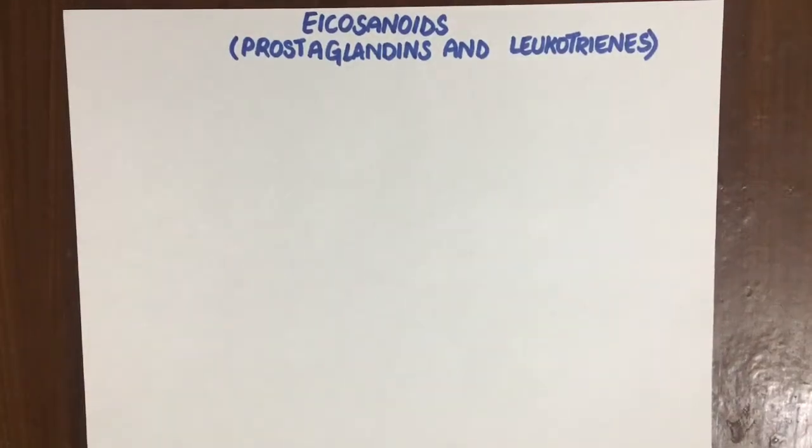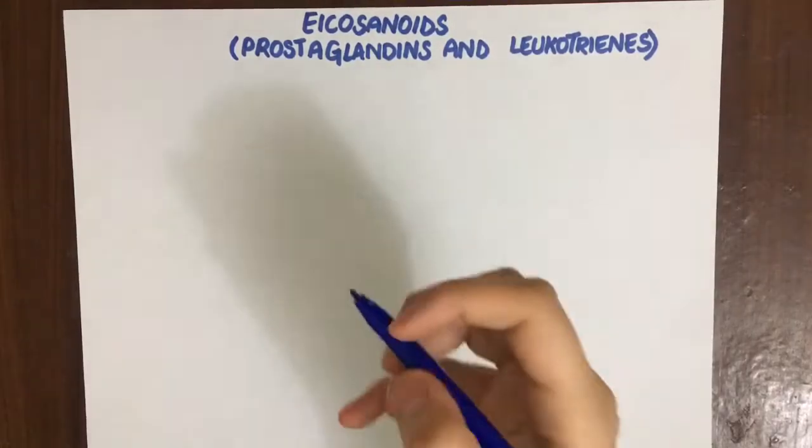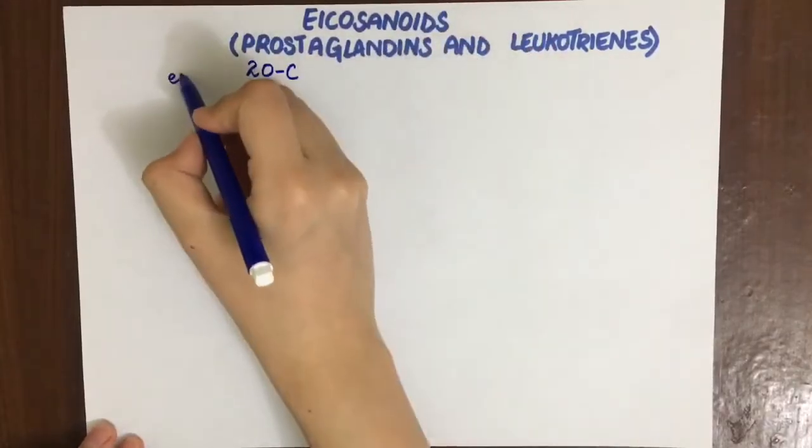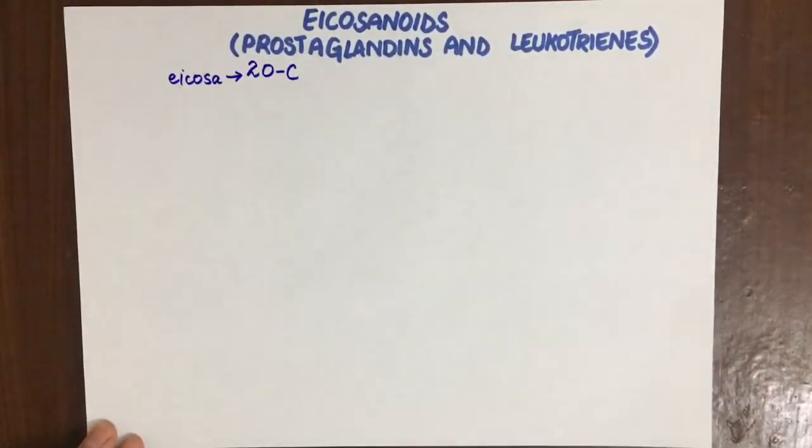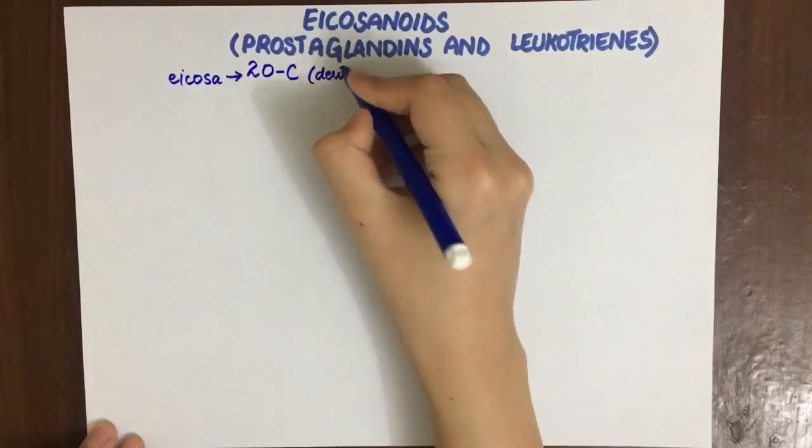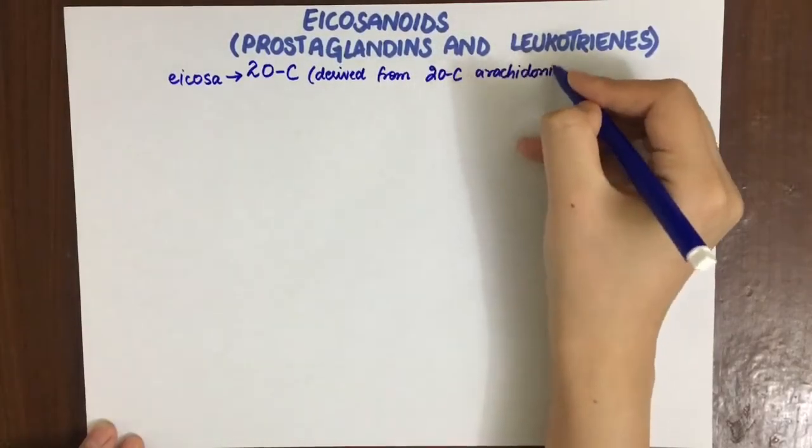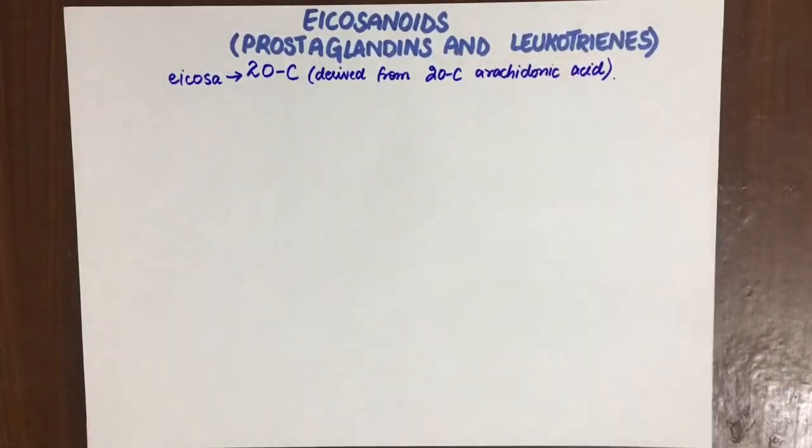Looking at this page, we have some terms to explain. Eicosanoids are derived from the word 'ecosa,' which means 20 carbon. They are compounds derived from the 20-carbon arachidonic acid. Why are we studying this?